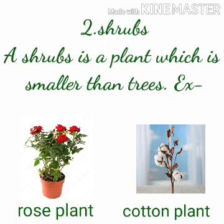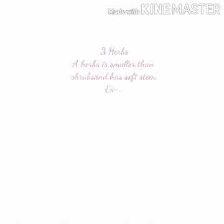Number 2: Shrubs. A shrub is a plant which is smaller than trees. For example, rose plant and cotton plant.